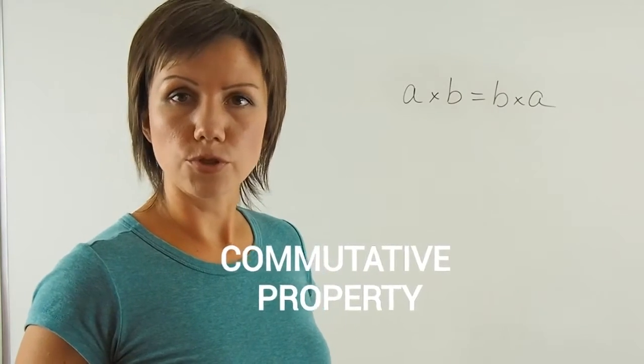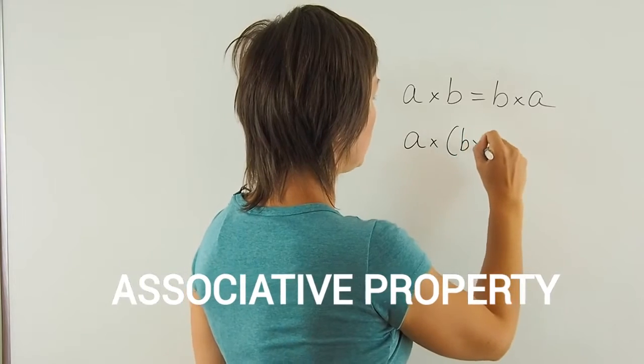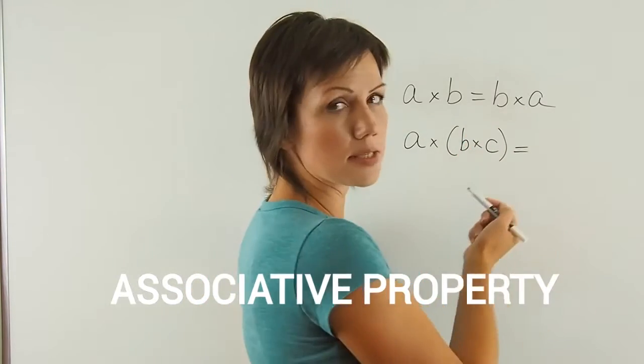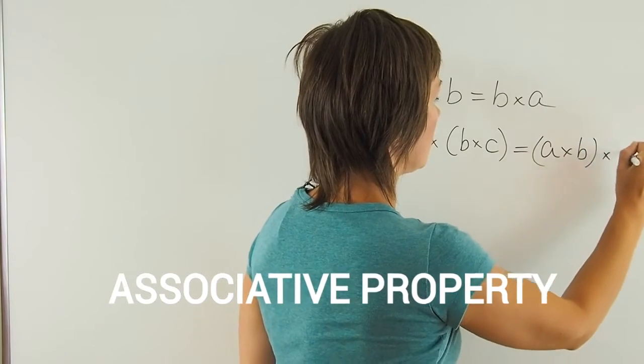The next one is associative. A times B times C is the same as A times B and times C.